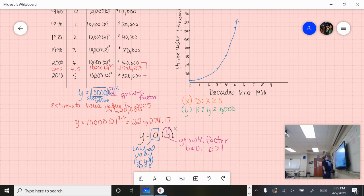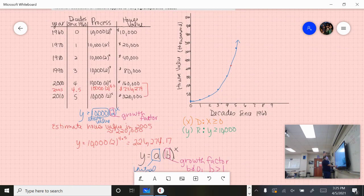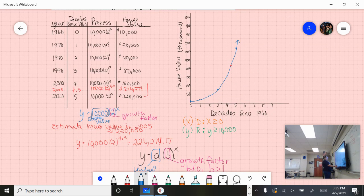Let's look at one more value on our table. If I want to know the value of the house 2.5 decades after it was purchased, I would do 10,000 times 2 to the 2.5. This time, 10,000 times 2 to the 2.5, I'm going to get $56,568.54. Again, I'm going to round it to the nearest whole dollar, so $56,569. If you're going backwards, 2.5 decades after 1960 is going to be 1985.